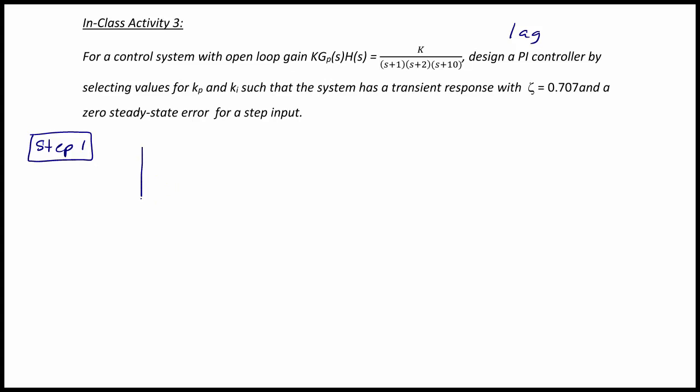First thing I'm going to do is make a sketch of the root locus. Here we have a pole at -1, a pole at -2, and a pole way out here at -10. This pole goes to infinity as K goes to infinity, and these two poles come together and veer off like this.